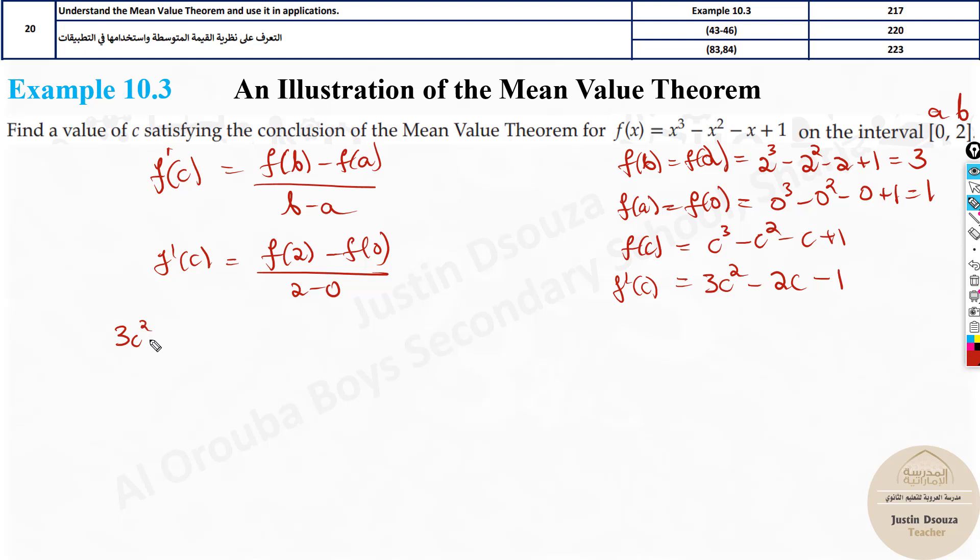So let's substitute everything over here. This is 3c squared minus 2c minus 1. That is equal to f of 2 is 3 minus 1 divided by 2 minus 0. Now, we will simplify. 3c squared minus 2c minus 1 is equal to 3 minus 2 is 2 by 2. So what's the answer? It's 1. Let's take this 1 to the other side. It will be 3c squared minus 2c minus 1 minus 1 is minus 2. This goes to the other side becomes minus 1 here. That is equal to 0.